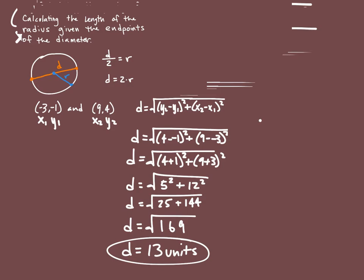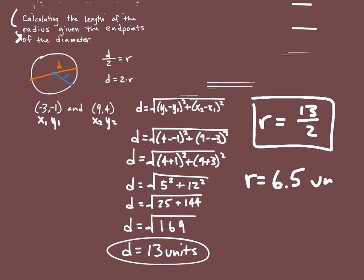And so if we wanted to calculate our radius, we would simply take our diameter, which is 13, and divide that by two. And you could leave it as 13 over 2, or you could get a value of 6.5 units. Either way, those are both the same thing, but that's what you'd want to do.